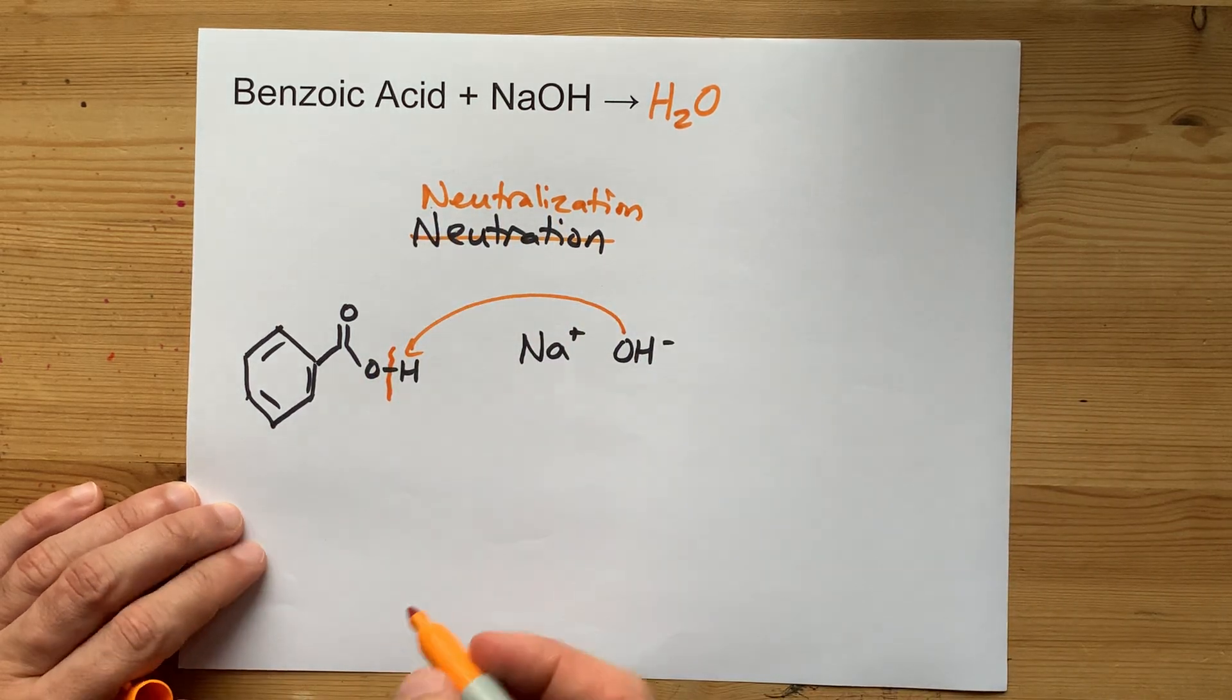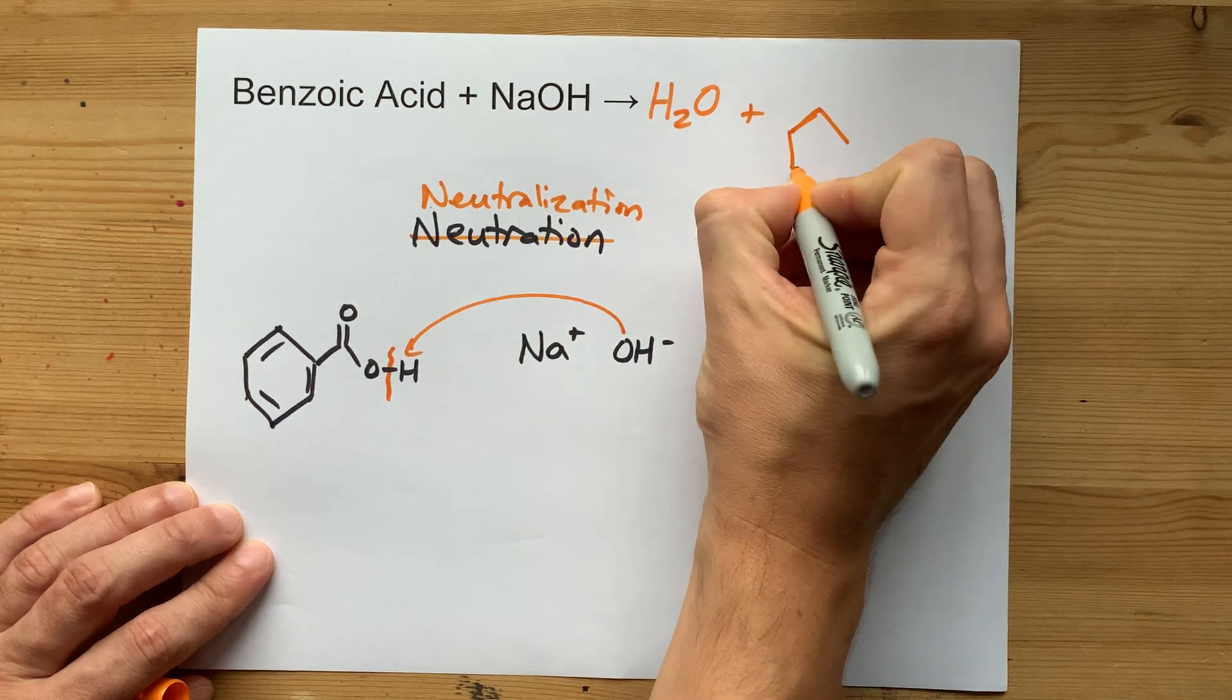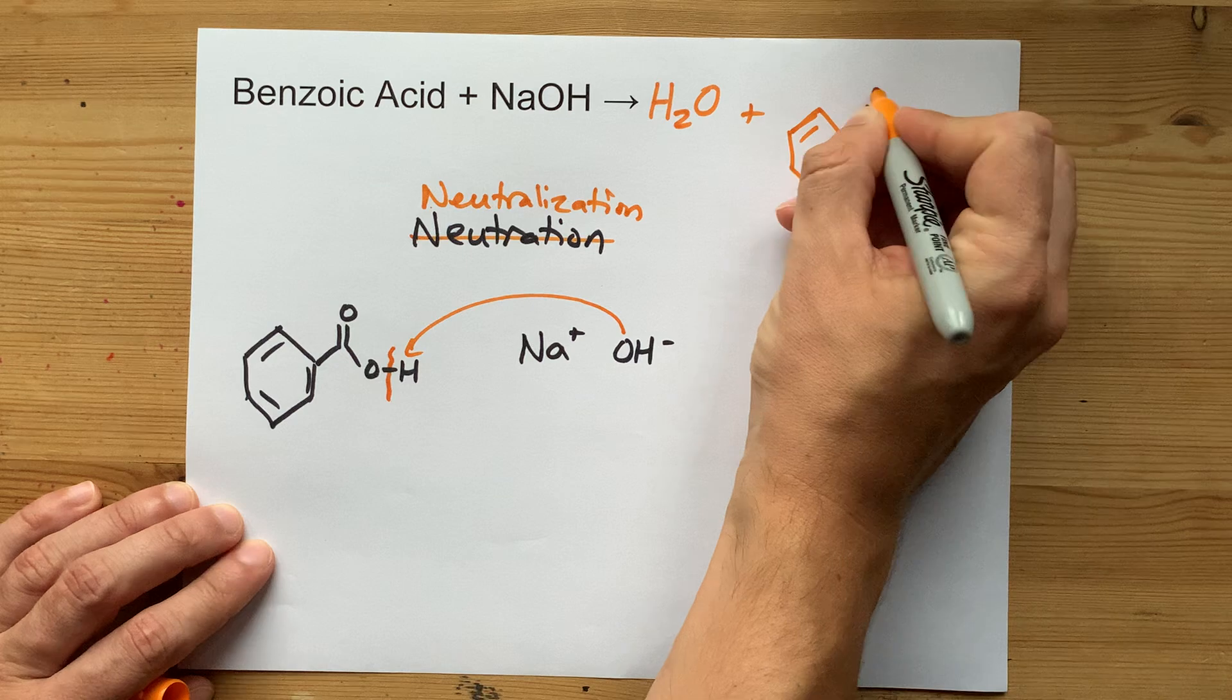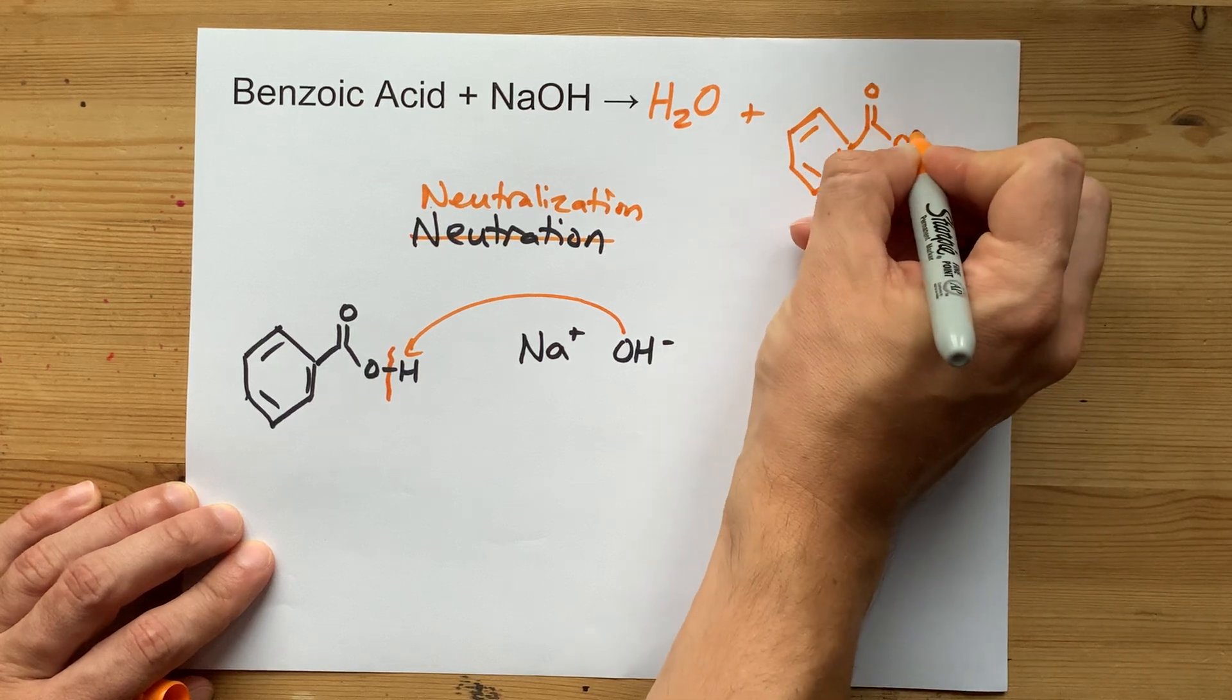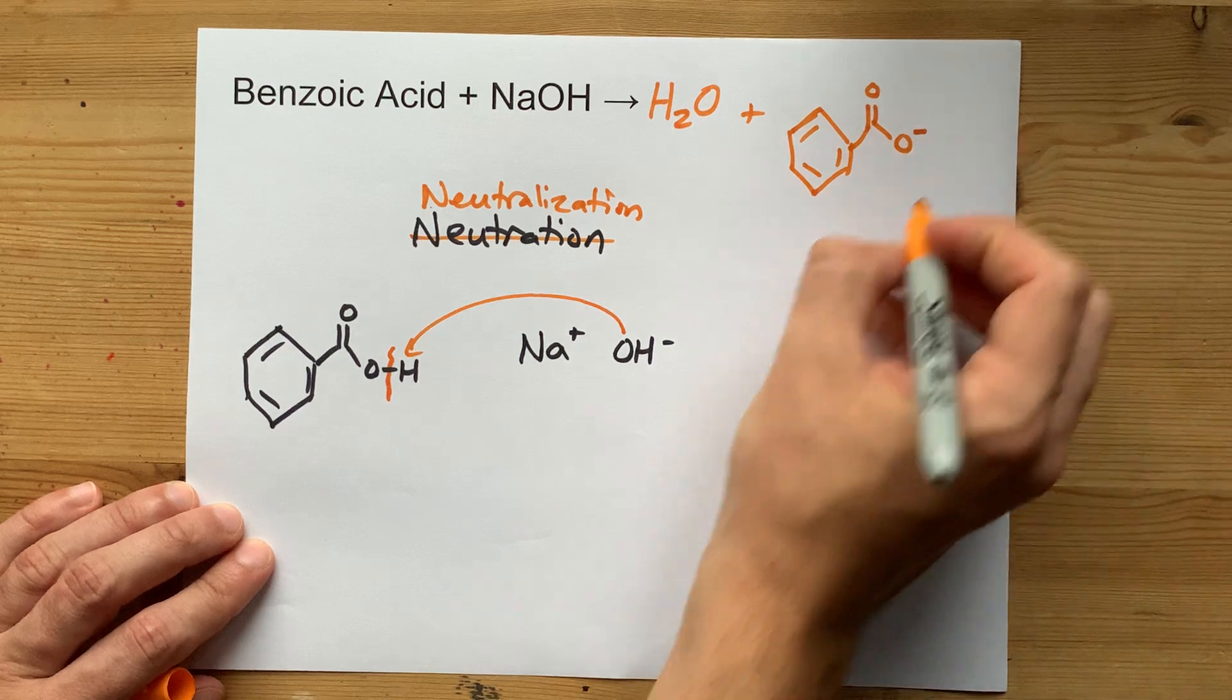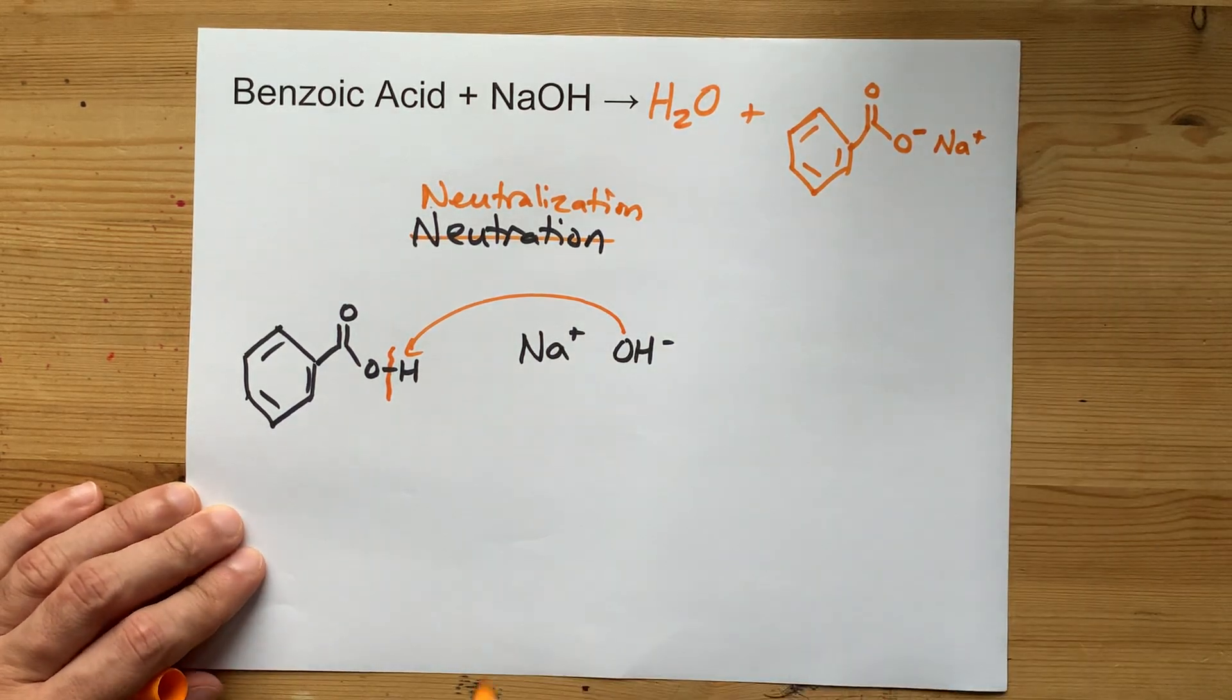What you're left with is that same molecule without the H, and in its place you can write the Na. I'm going to write an extra minus charge there to show that it had lost the H+. Then you can write the Na+ there as the counter ion.